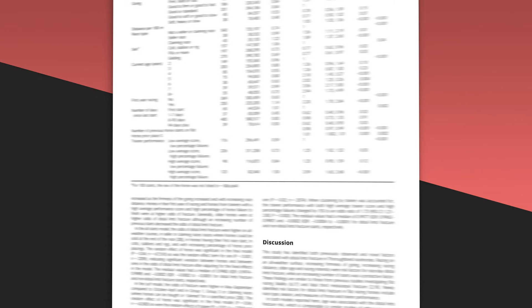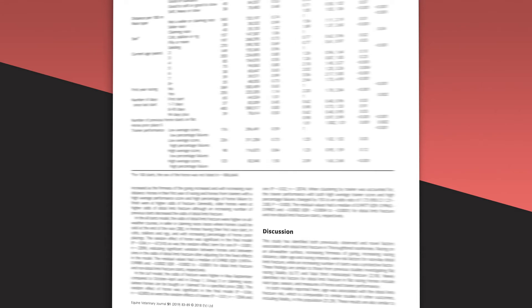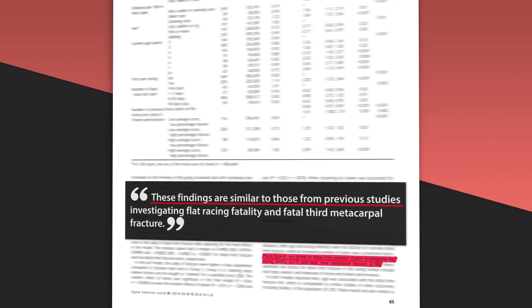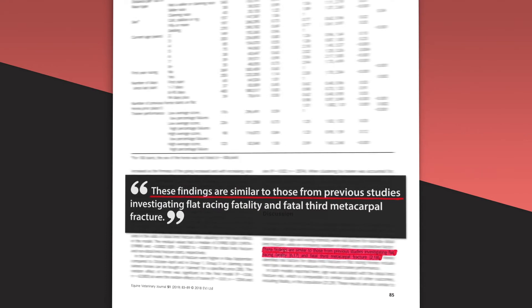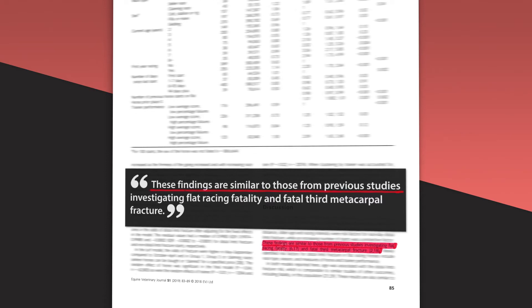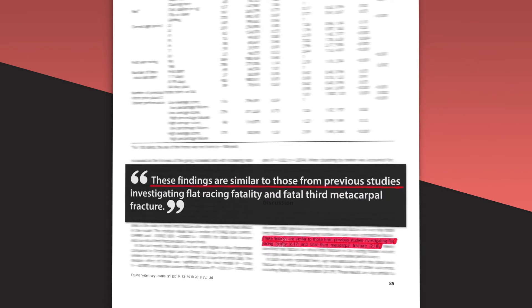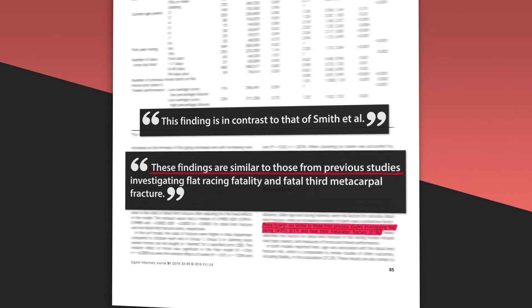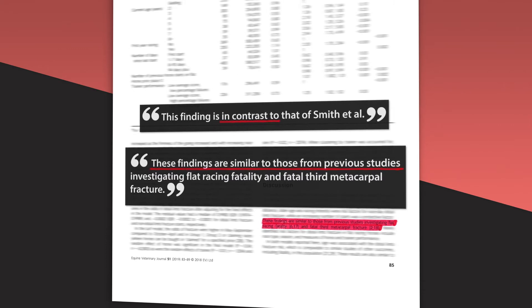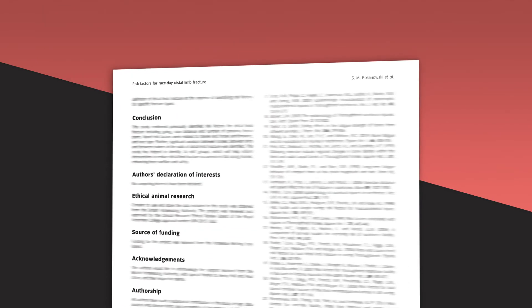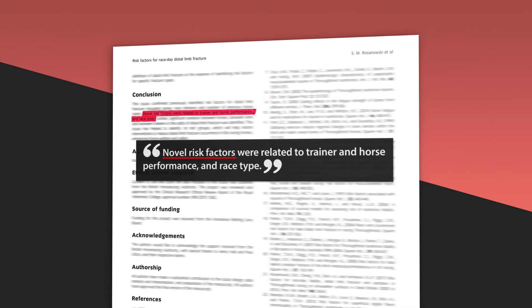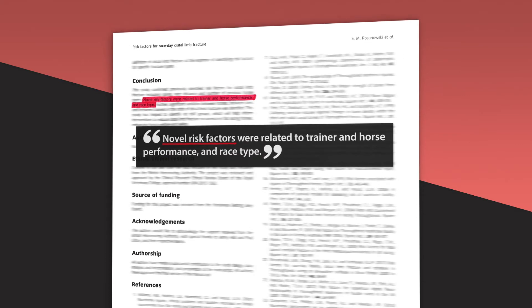Another strategy is to explain how your findings relate to earlier research. One way is to say your results confirm existing knowledge: 'These findings are similar to those from previous studies investigating flat racing fatality and fatal third metacarpal fracture.' A second way is to indicate if your findings challenge earlier research: 'This finding is in contrast to that of Smith et al.' The third way is to draw attention to results which are new: 'Novel risk factors were related to trainer and horse performance and race type.'